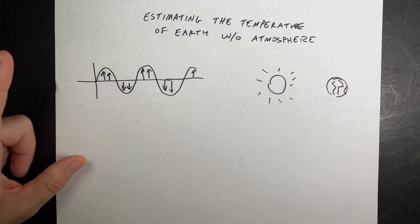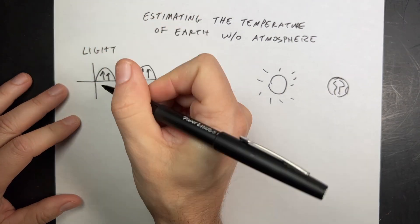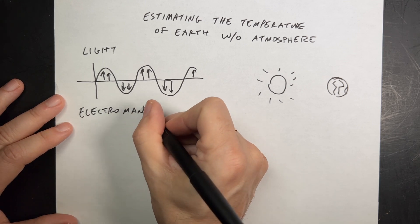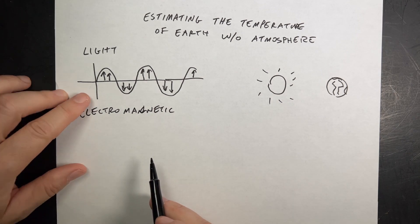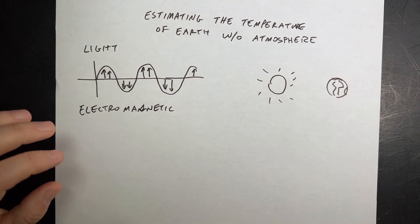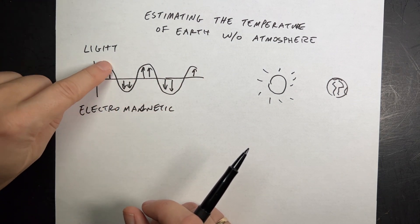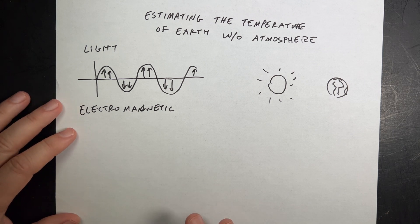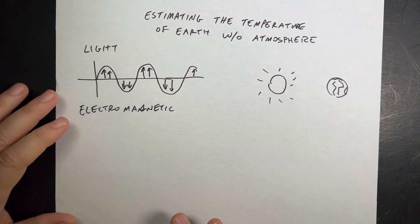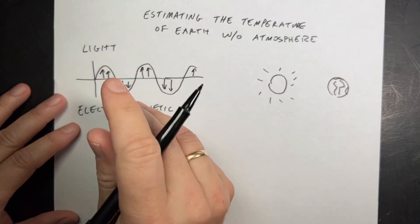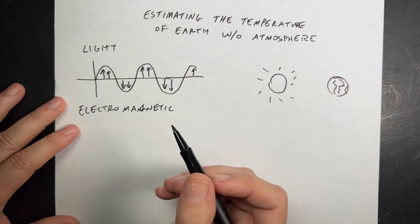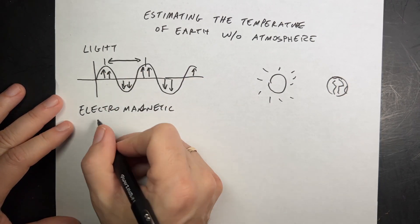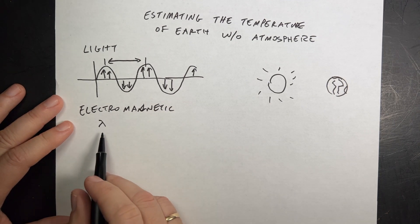Let's start talking about light. We say light, but it's really an electromagnetic wave — it's electro because it has an oscillating electric field, and magnetic because it has a magnetic field. Like all waves, there are three important properties. This is a depiction of an electromagnetic wave showing the oscillating electric fields. The wavelength is the distance from one peak to the next peak — we represent that with the symbol lambda.